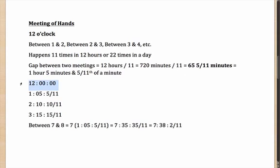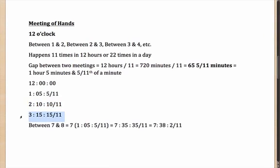So one meeting happens at 12:00. The next one will be 1 hour, 5 minutes and 5/11 of a minute later — that is 1:05 5/11. Add another 1 hour 5 minutes 5/11 and you get 2:10 10/11. Add another and you get 3:15 15/11. But 15/11 is 1 and 4/11, so carrying over the extra minute gives you 3:16 4/11.